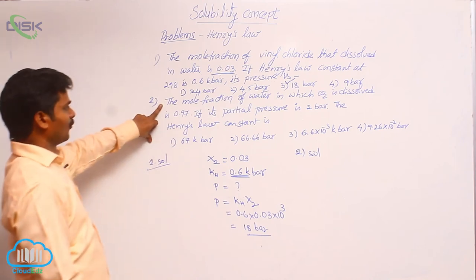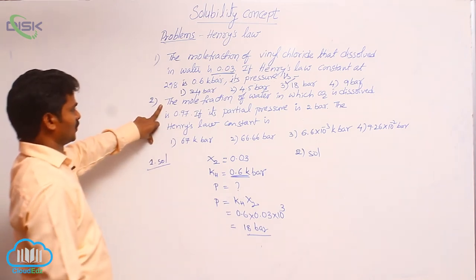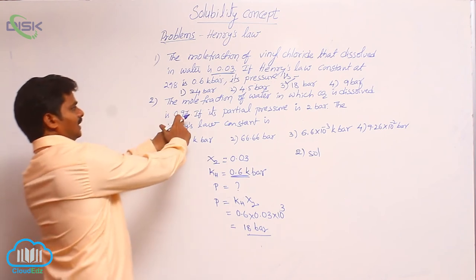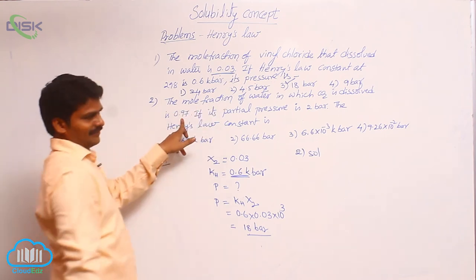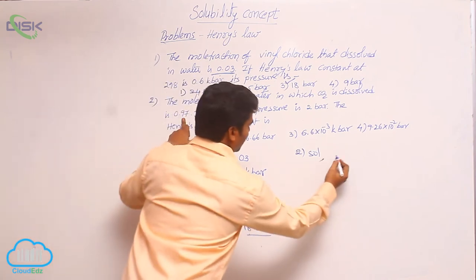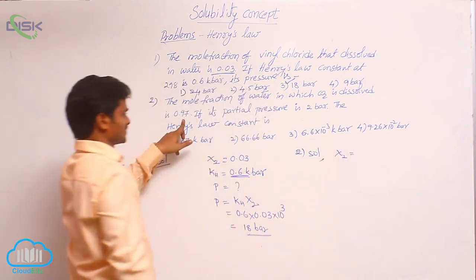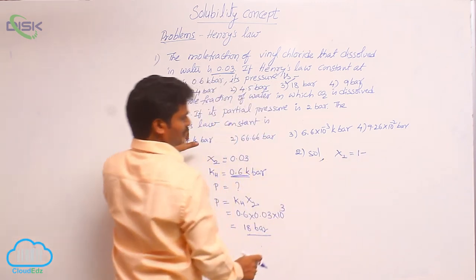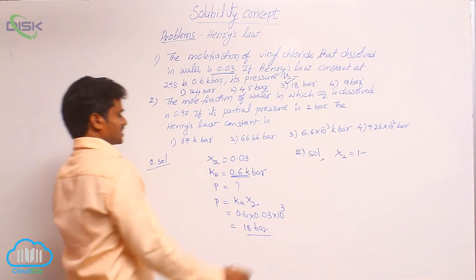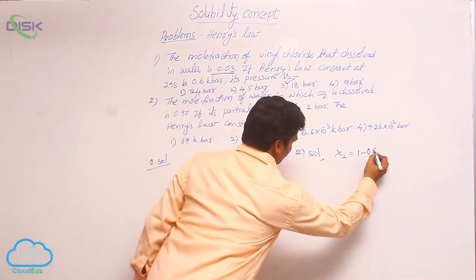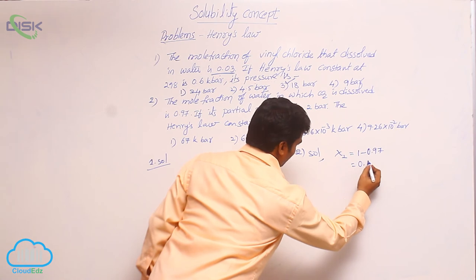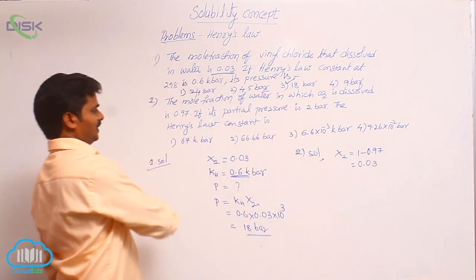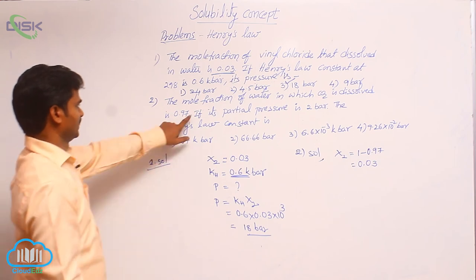See the second problem: the mole fraction of water in which CO2 is dissolved is 0.97. Here mole fraction of solvent is given. So how to calculate mole fraction of solute from the mole fraction of solvent? Mole fraction of solute is equal to 1 minus mole fraction of solvent. That means 1 minus 0.97, which is 0.03.